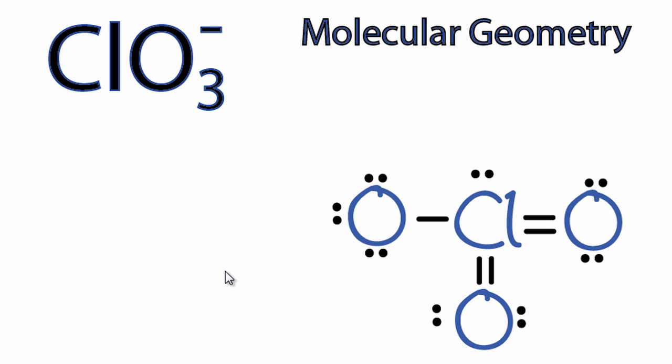We can use the AXN notation to help us determine, to predict that shape. So A, that's the central atom, that's our chlorine, we have one of those.